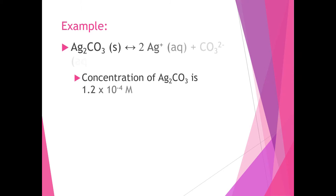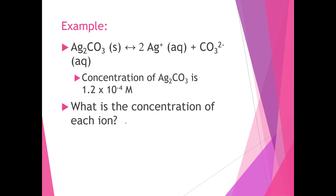What gets interesting is if the compound does not completely dissolve. Here's an example with silver carbonate: it will dissolve into two silver ions and one carbonate ion. Suppose the concentration of silver carbonate is 1.2 times 10 to the negative 4 molar. The silver ion concentration will be two times 1.2 times 10 to the negative 4 molar, giving 2.4 times 10 to the negative 4 molar.